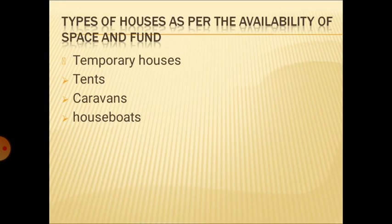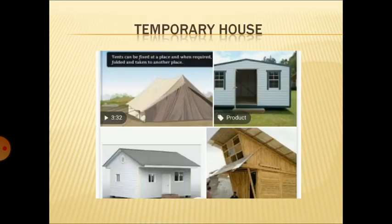Now comes houseboats. Houseboats are houses which are also known as floating houses. You can find these houses in places where water bodies like lakes are present. They are generally found in Kashmir, Kerala, Hong Kong, and Holland. These houses are made on water and can float easily. Let's see the picture of temporary houses — you can see how beautiful these pictures are, including a tent.